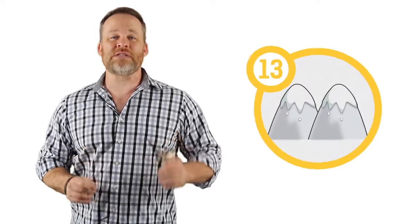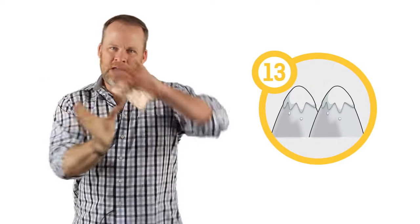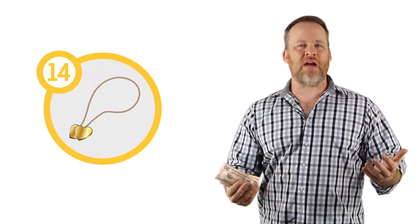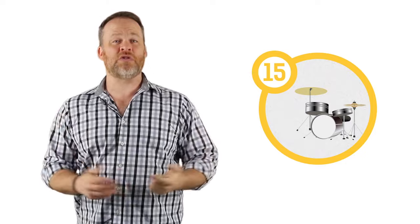Eleven was a goal post because a goal post has two sides on it. Twelve was eggs because a dozen eggs. Thirteen was a mountain because the curves of a three, if you lay it on its side, kind of looked like the curves of mountaintops. Fourteen I made a necklace—fourteen karat gold, or maybe February 14th you give a necklace for Valentine's Day. Number fifteen I turned into a picture of drums because the five kind of looks like drums with the cymbal above it and the one looks like the drumstick.